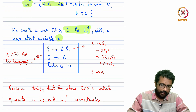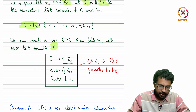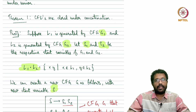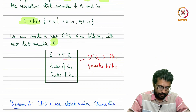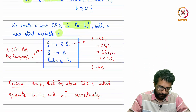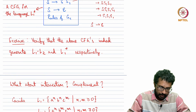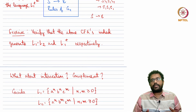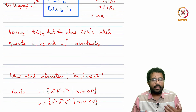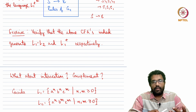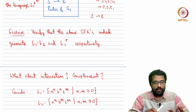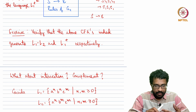An exercise is to verify that these two grammars indeed generate the languages they were supposed to generate. Recall that for regular languages, we saw that they are closed under union, intersection, complement, the star operation, and concatenation.